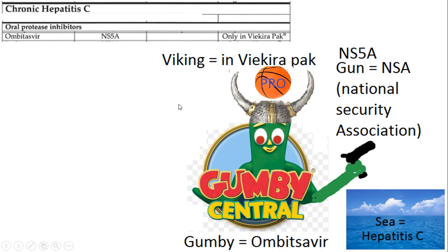Another chronic hepatitis C drug is ombitasvir. 'Omby' kind of sounds like Gumby, so here's Gumby wearing his Viking hat. Gumby is actually a professional basketball player — protease inhibitor. After his life in the movie business, Gumby decided to join the National Security Association, so he got a gun — that stands for NSA, which stands for NS5A. He's going to retire and do security out by the sea — hepatitis C.